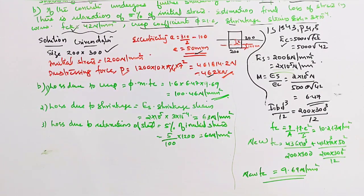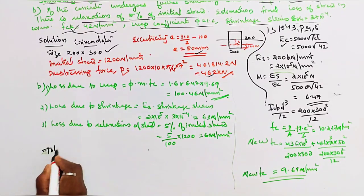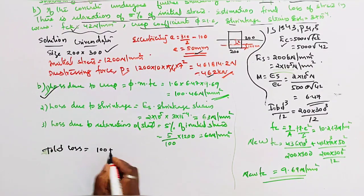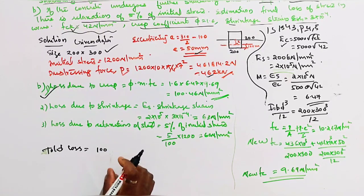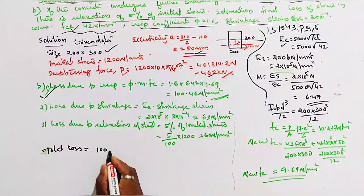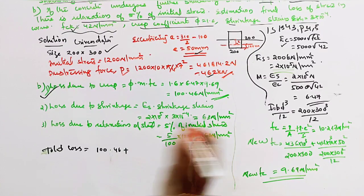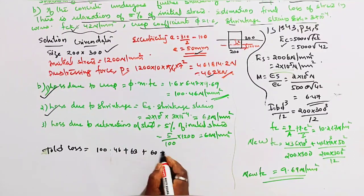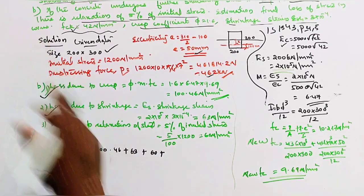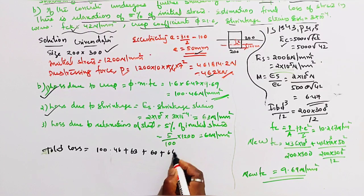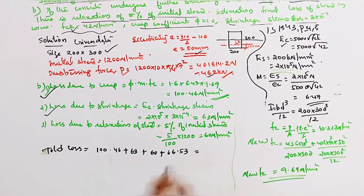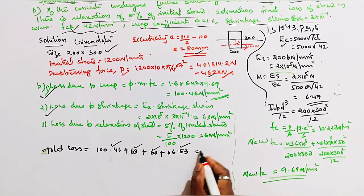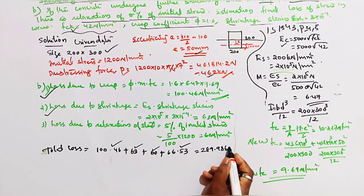Total loss = loss due to creep + shrinkage + relaxation + elastic shortening = 100.46 + 63 + 60 + 66.53 = 289.99 Newton per mm square.